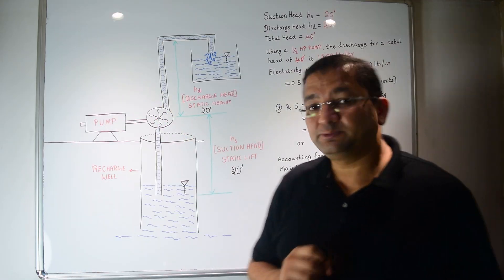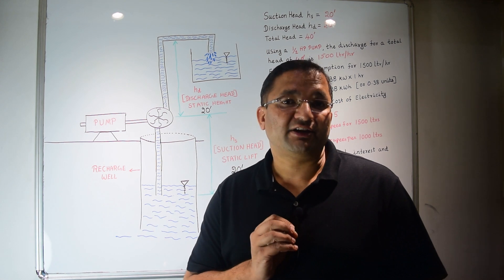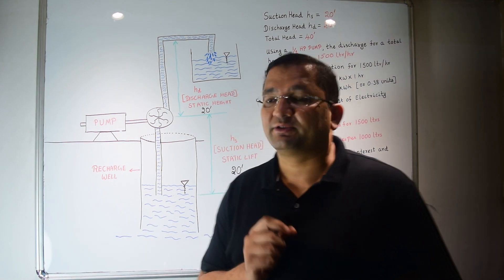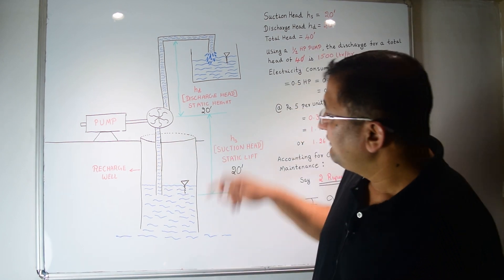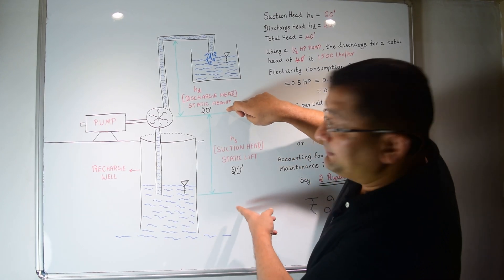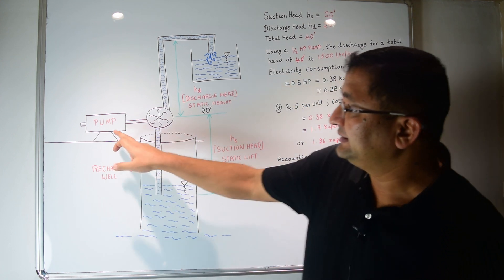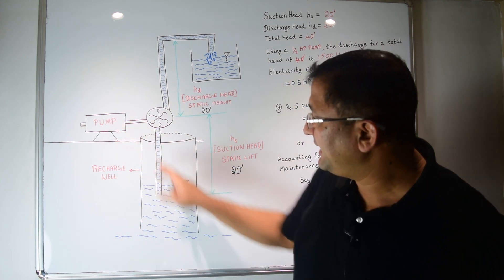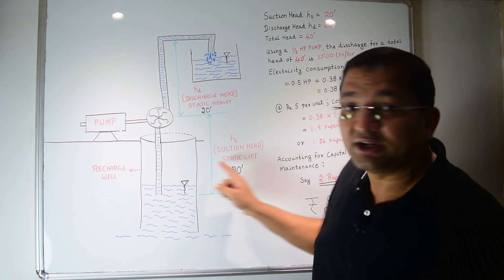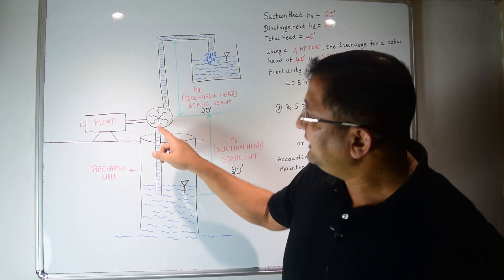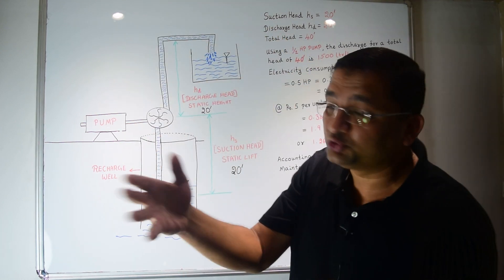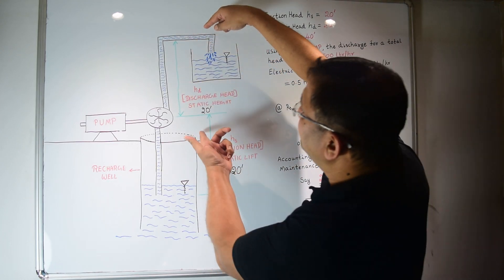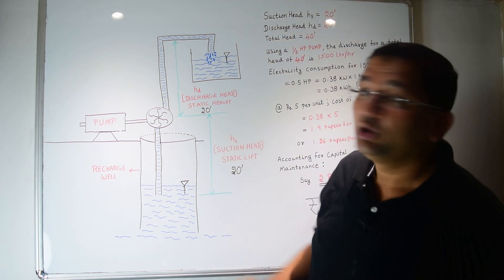I will now try to explain the economics of unconfined aquifer or the shallow aquifer. So this is our recharge well or withdrawal well where the water is available at a depth of 20 feet, and this is our pump. So the pump has to suck the water for 20 feet. We call it as the suction head and it has to deliver this water to another 20 feet, say a two-story building.